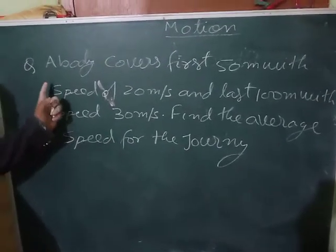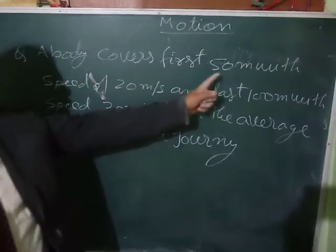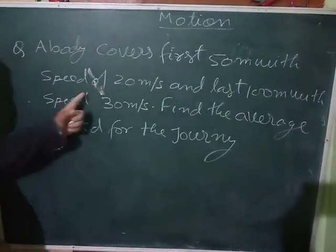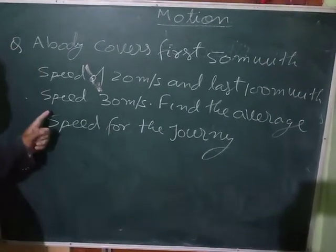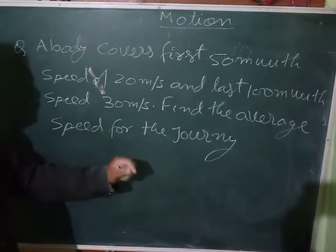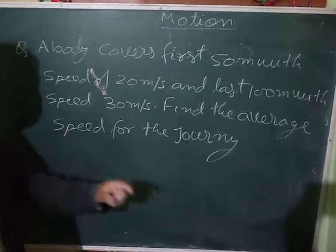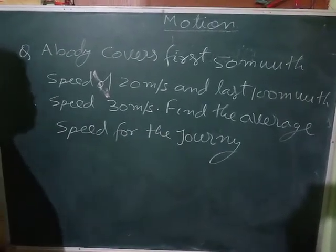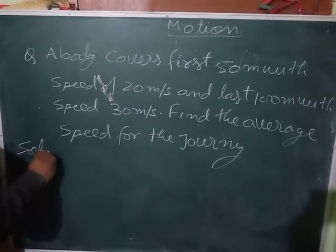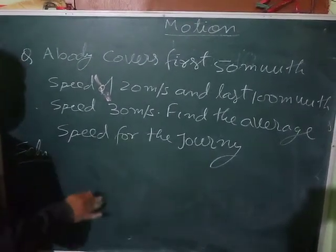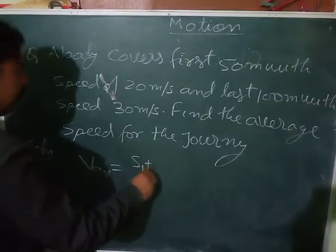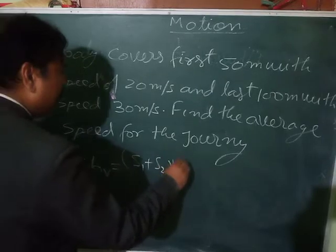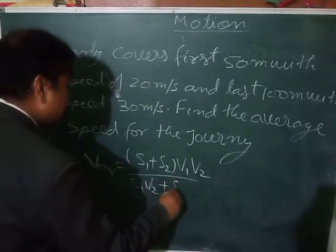Now a question on average speed. A body covers first 50 meters with a speed of 20 meters per second, and the last 100 meters with a speed of 30 meters per second. Find the average speed for the journey. We use the Case 1 formula: average speed = (S1 + S2)·V1·V2 / (S1·V2 + S2·V1).